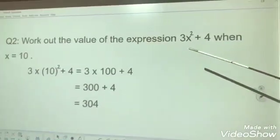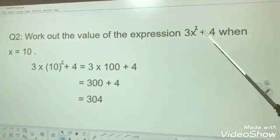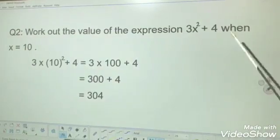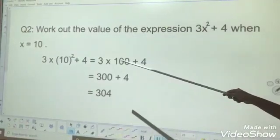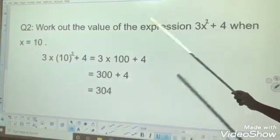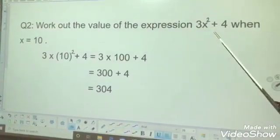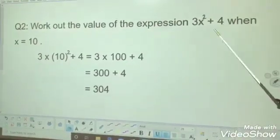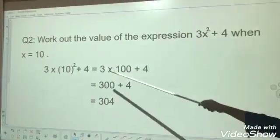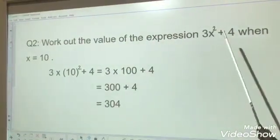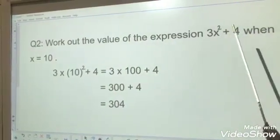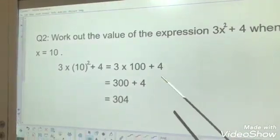Work out the value of the expression 3x to the power of 2, or x squared, plus 4 when x equals 10. The expression is given and they had given the value for x also. So it is easy to find. Take the expression 3x to the power of 2 plus 4. What is the value of x? Value of x is 10, so instead of x, put 10. You know the rule, that is BIDMAS.